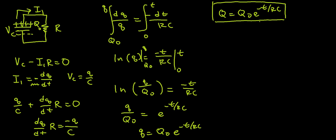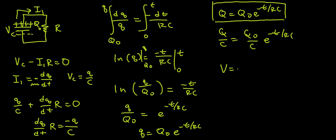Just like for charging, I can divide both sides by C to get my voltage equation. So I have Q over C equals Q naught over C times e to the negative t over RC, and I get V equals V naught e to the negative t over RC, where V naught is the initial voltage, or the maximum voltage of the capacitor.